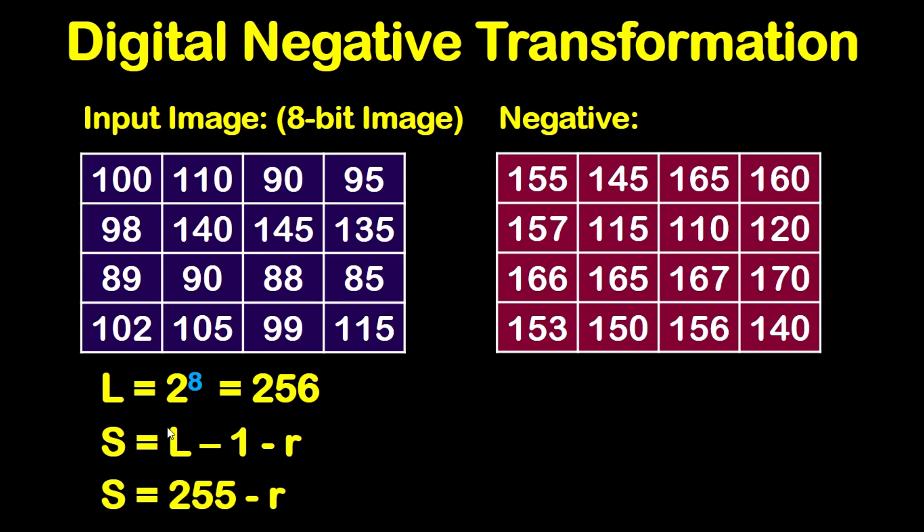And to be able to get L, L will be equal to 2 power 8 since we have an 8-bit image like this. So we are going to say 2 power 8, this will give you 256. So S will be equal to L which is 256 minus 1, which is 255 minus R. And R is the original pixels of the input image, which are these pixels.